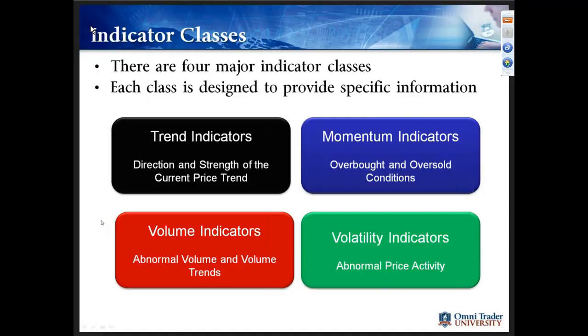There are basically four classes of indicators. I think there are four major types and two of them are much more common than the other ones. In this course we'll be concentrating on the two major types. That would be trend indicators — that is today's session — and then momentum indicators, that will be next week's session. You'll also see volume indicators and volatility indicators.